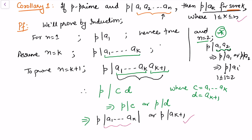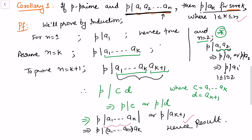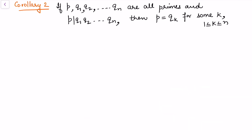If p divides a1·...·a_k, by the induction hypothesis p divides some a_i for i between 1 and k. Repeatedly applying this step we arrive at the result. Hence the result is proved: whenever p divides a product of integers, p must divide a_k for some k.